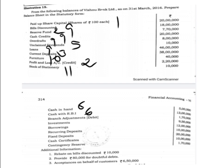So here they have given a debit balance, that is why we are taking it in note number 11, that is under other assets. Investments should be shown in note number 8. Borrowings, note number 4. Recurring deposits should be shown in note number 3, that is under deposits. Fixed deposits also note number 3. Cash certificates is a kind of deposits received from the customers, so it should be shown in note number 3. Contingency reserve should be shown in note number 5.